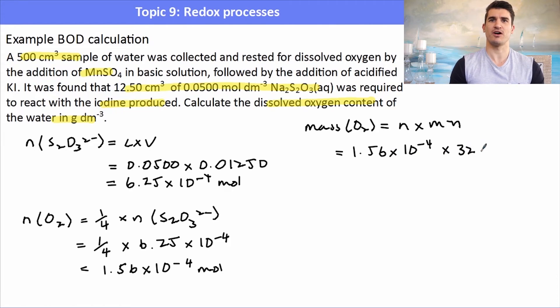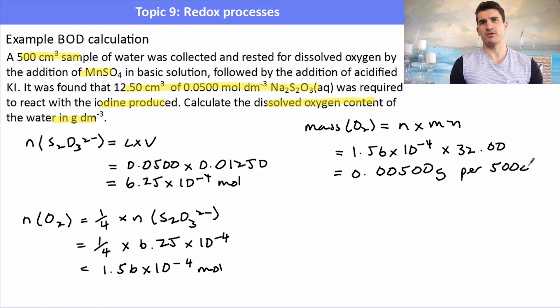Now going back to the question, I didn't have a decimeter cubed of sample. I only had 500 centimeters cubed. So that's my mass in 500 centimeters cubed. So how do I put this into grams per decimeter cubed? Well what I need to do is double it. Because my sample is only 500 centimeters cubed, to get it into a decimeter cubed, I would need to multiply it by 2.